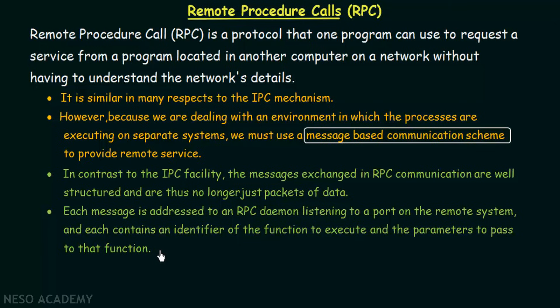Each message contains an identifier of the function to execute and the parameters to pass to that function. When one process wants to communicate to another process residing in another system, the message is addressed to an RPC daemon listening to a port on the remote system. A daemon is a program that is always on, always listening, and waiting for input to act upon. The stub locates the specific port on the server, as each service is identified by a port number.